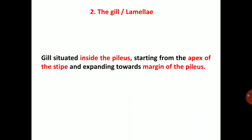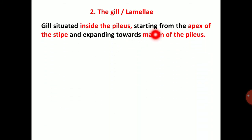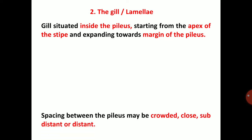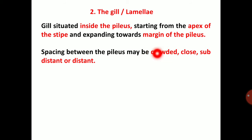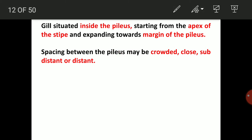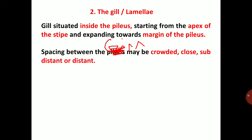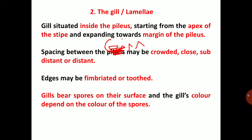The gill or lamella is situated inside the pileus, starting from the apex of the stipe and expanding towards the margin of the pileus. The spacing between gills may be crowded or distant. The edge may be fimbriated or toothed. Gills bear spores on their surface and the gill color depends on the color of the spores.